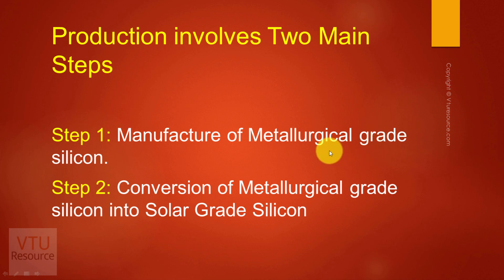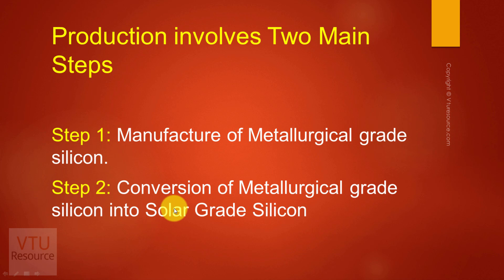Metallurgical grade silicon contains a high level of impurities, whereas semiconductor grade silicon contains very low levels of impurities, that is at the PPB level. So we need silicon with impurities at an intermediate level between metallurgical grade silicon and semiconductor grade silicon, and such silicon is known as solar grade silicon. The impurity level is in between the two grades.